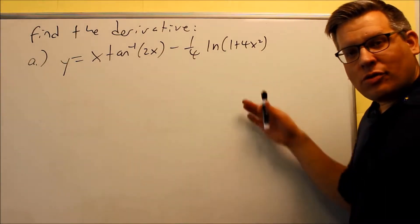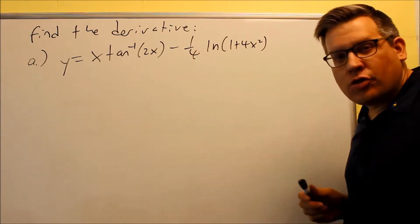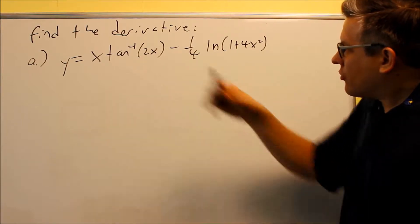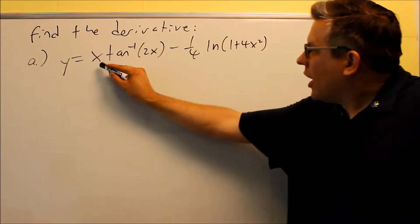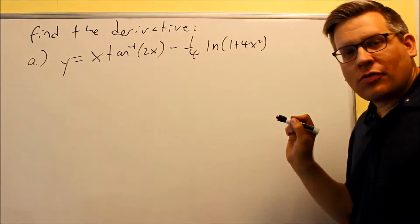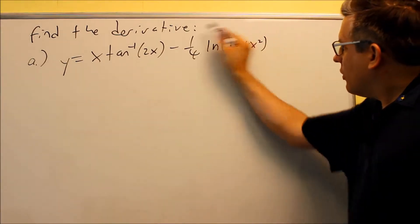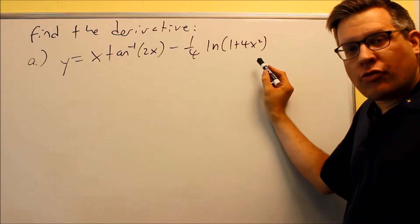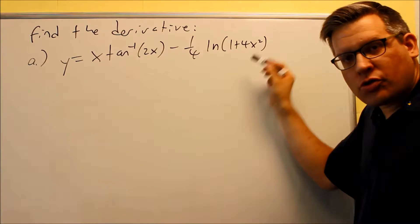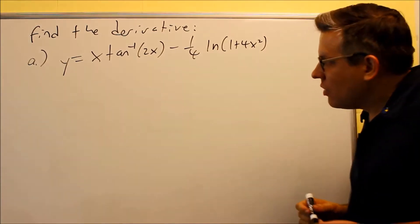We have two more problems that relate to derivatives of inverse tangent. For this one, we have to use the product rule because there are two things multiplied together. We also have to remember our rule for the derivative of natural logs, which is u prime over u, that we talked about in a previous section.